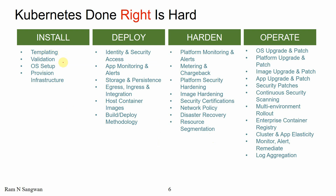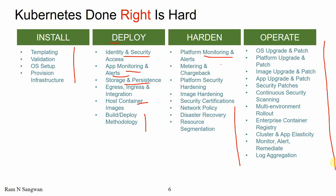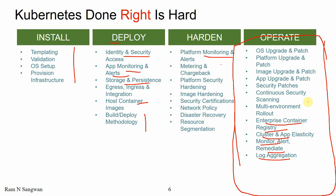But Kubernetes done right is very hard. Installing, templating, validating, operating system setup, provisioning infrastructure — all these things you need to take care of when you deploy. You have a lot of concerns like identity and security access, app monitoring and alerts, storage and persistence, egress and ingress rules, integration, host container images. Similarly, hardening the deployment platform, monitoring, alerts — this scope keeps increasing, and when it comes to operating, you have a lot of work to do.